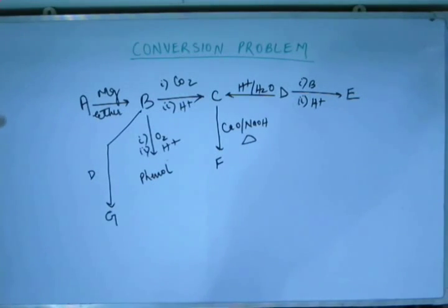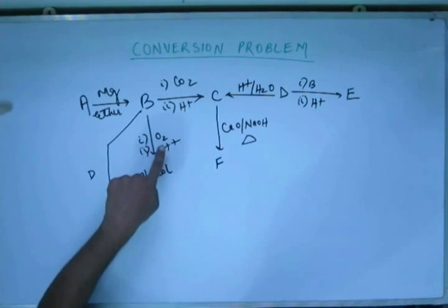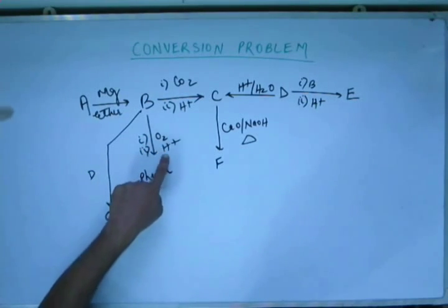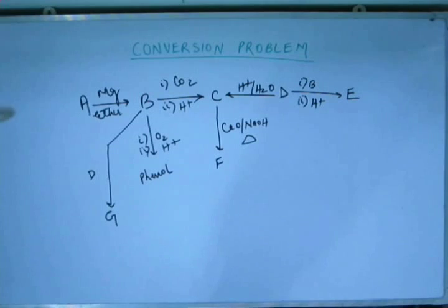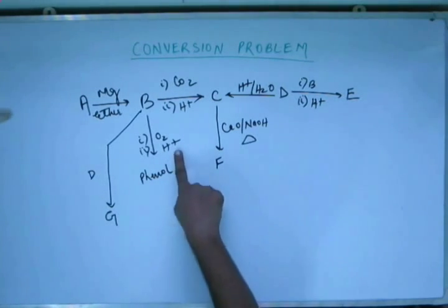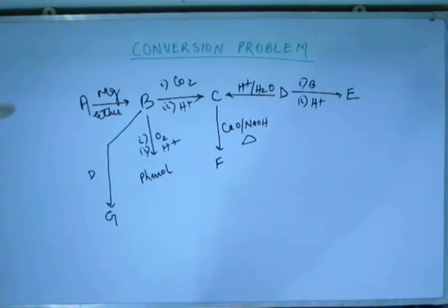I have given you that if you react B with oxygen subsequently adding H plus you get a phenol. Now you have to go back into your memory and scan all the reactions that you have studied in organic chemistry that results in formation of phenol and that will not be many of them. Among those reactions then you have to zero down to the particular reaction in which you add oxygen to something followed by hydrolysis. This H plus will be doing nothing but hydrolysis and that results in formation of phenol.